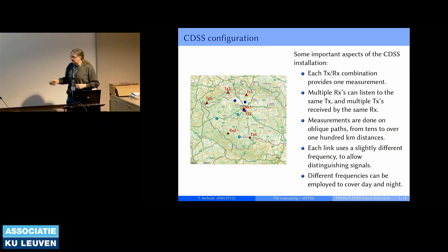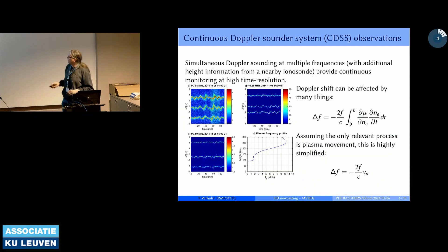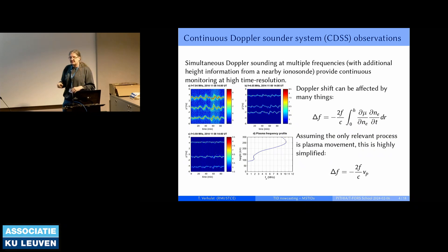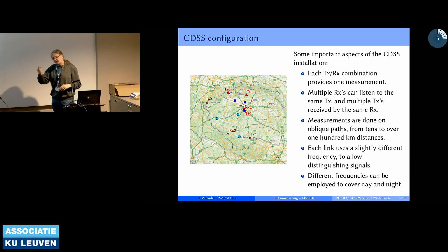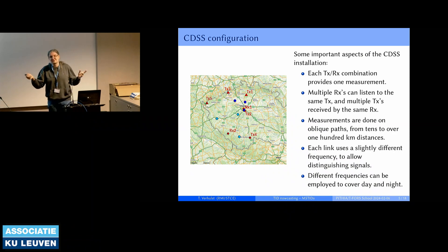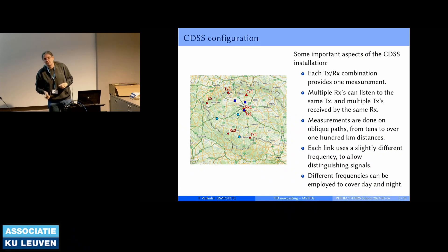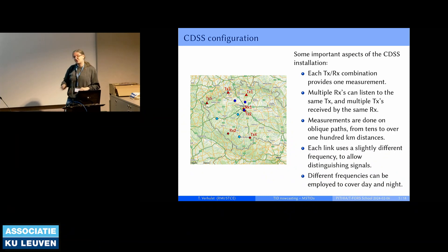One important point about using different frequencies: these three frequencies of 7.4, 4.6, and 3.6 MHz all work 24 hours a day, but the 7-point-something MHz will not see reflections at night because the ionosphere lacks sufficient electron density to reflect that signal. So if you want measurements for 24 hours a day, you either need to pick one frequency very carefully or use multiple frequencies.